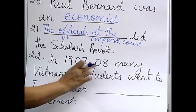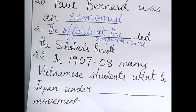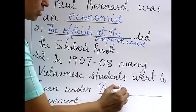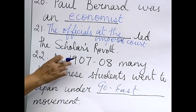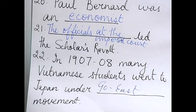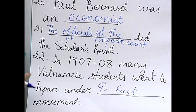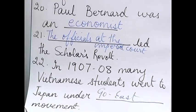Twenty-second: in 1907–1908, many Vietnamese students went to Japan under the Go East movement. Why? Because in 1905 Japan had defeated a very big country — Russia. So they felt they did not always have to go to the West to modernize. That is why students went to Japan — that was the Go East movement.